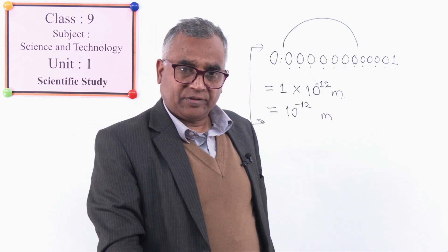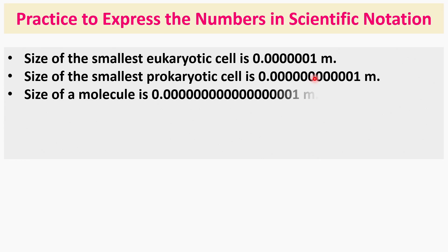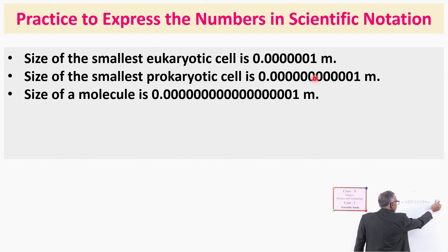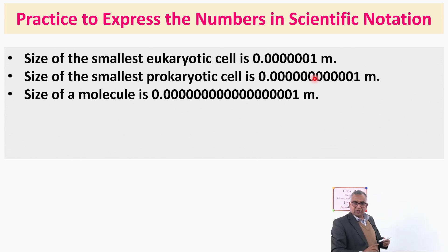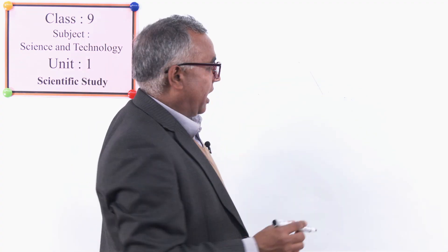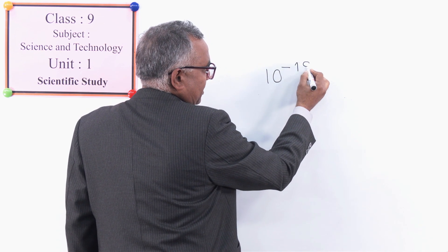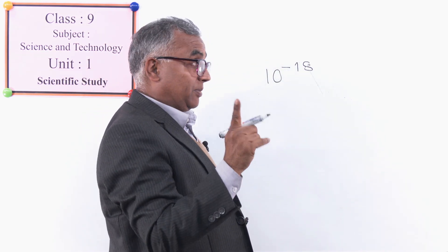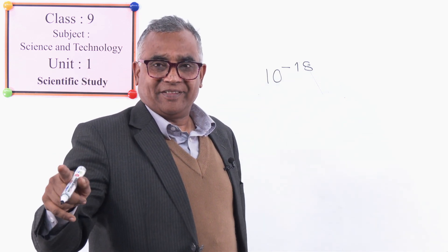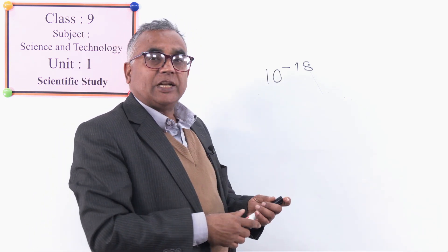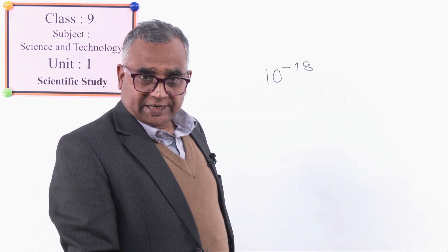Do the others yourself. Size of molecule — the answer is 10 to the power minus 18, because there are 17 zeros plus 1 digit — that is 18. If you got it, good. Otherwise, find out where you made a mistake.